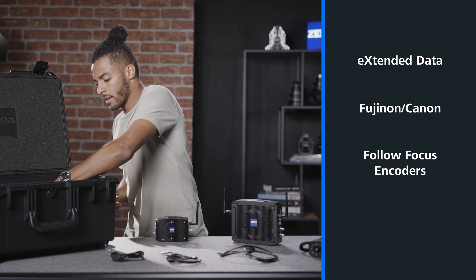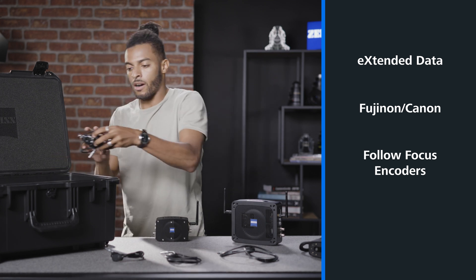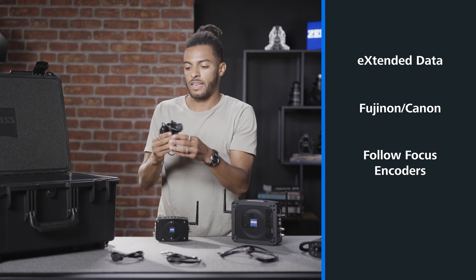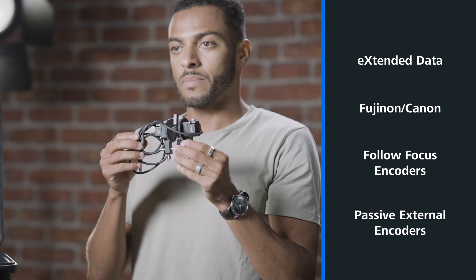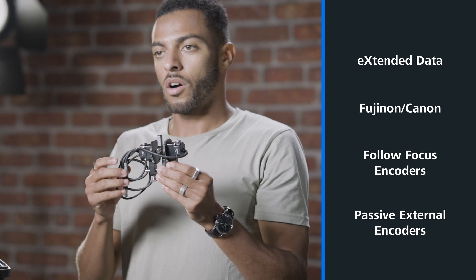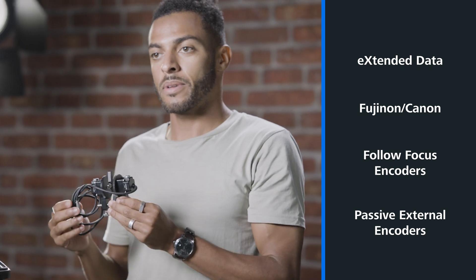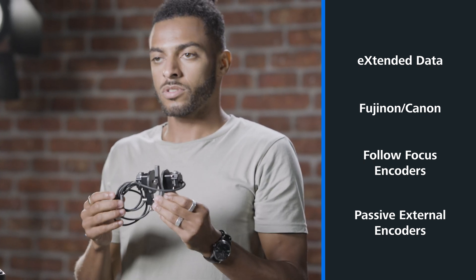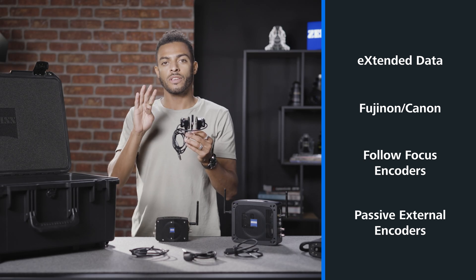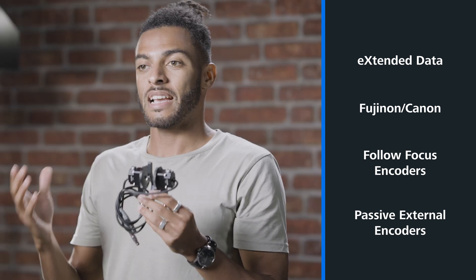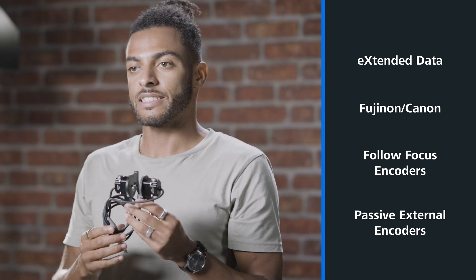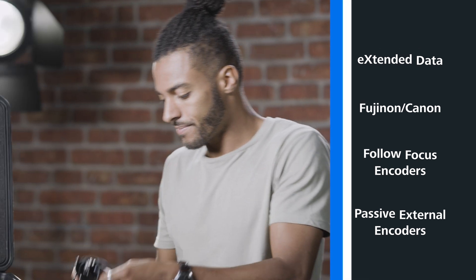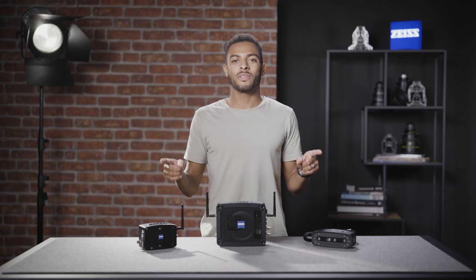Finally, we have our passive external encoders, which can be mounted on our 15mm and 19mm rod clamps. They also come with four different pitch gears to fit almost any industry lens. Thanks for joining our hardware tutorial — we'll see you at the next one.